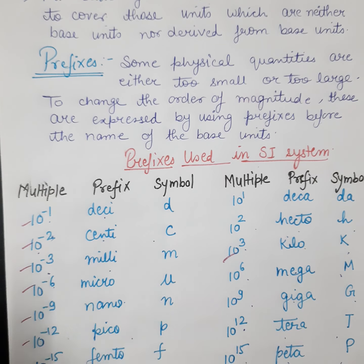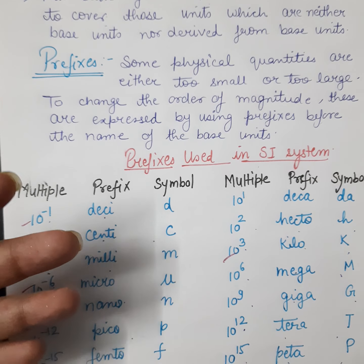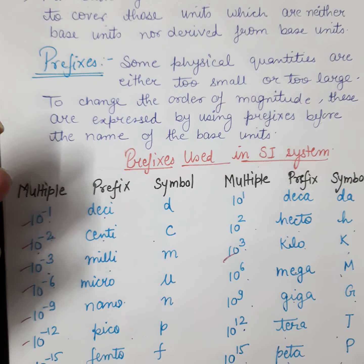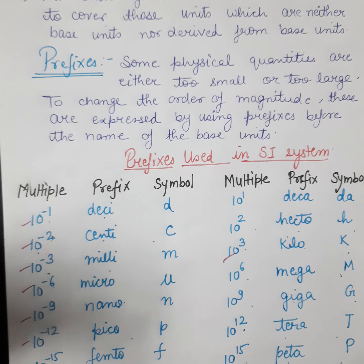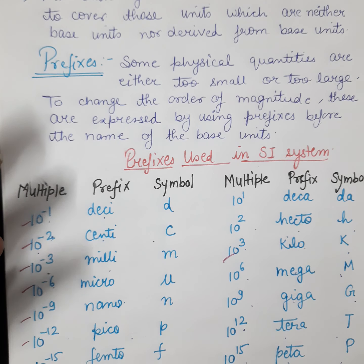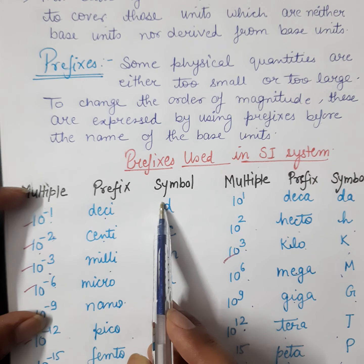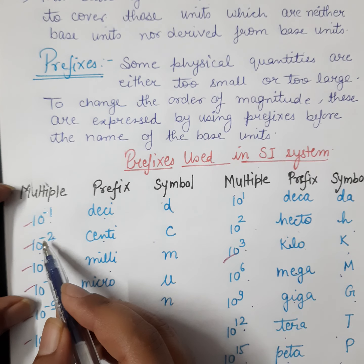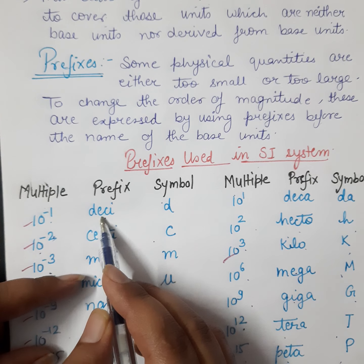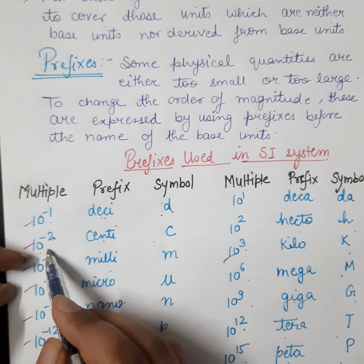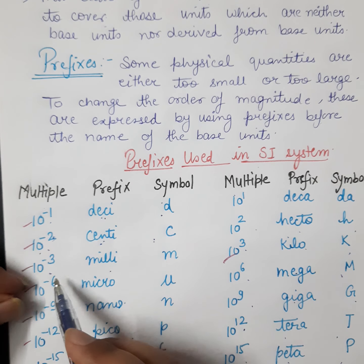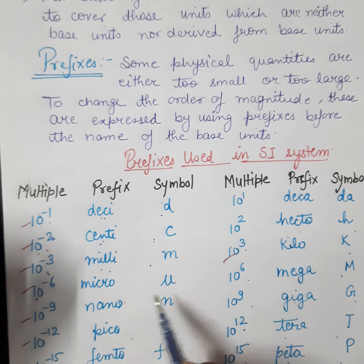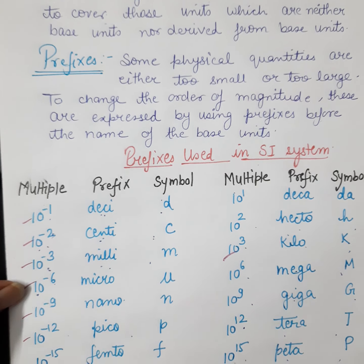When you go further into the next units — structure of matter, equilibrium, thermodynamics — you will know the values of these units. This unit is very useful in your class 12th also. Going through the prefix table: 10⁻¹ is deci (d), 10⁻² is centi (c), 10⁻³ is milli (m), 10⁻⁶ is micro (µ), 10⁻⁹ is nano (n).